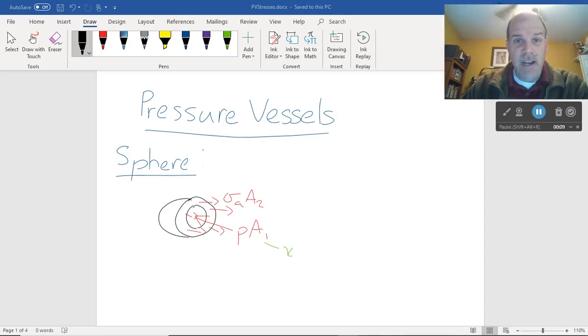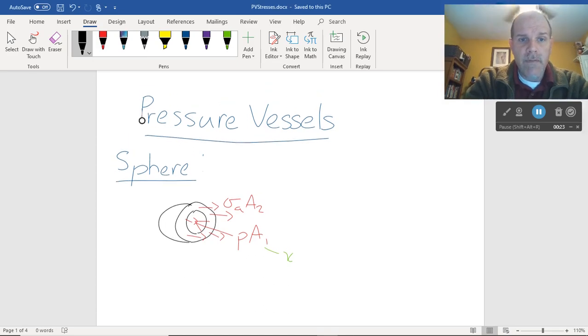We'll talk about shear stresses and all the 3D stuff in a later video. So what I have here is a sphere and I've got what amounts to a free body diagram because I've got sigma a times a2 and p times a1. Well a1, if we're taking the radius here, is equal to the inner radius of the pressure vessel and t is the wall thickness.